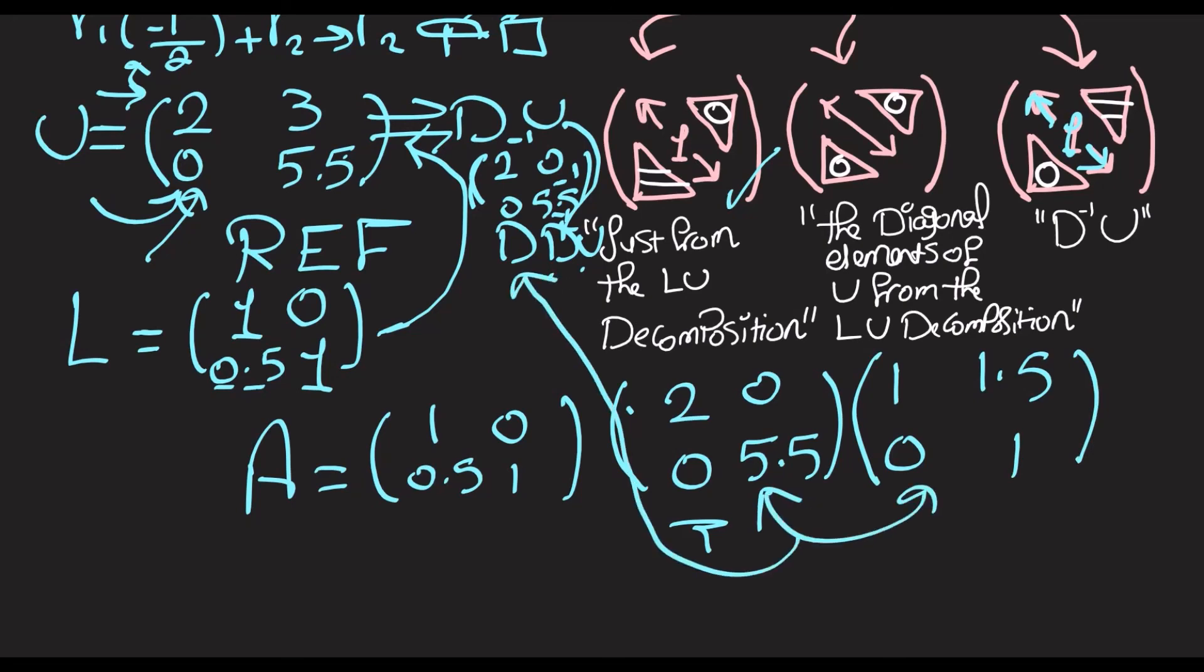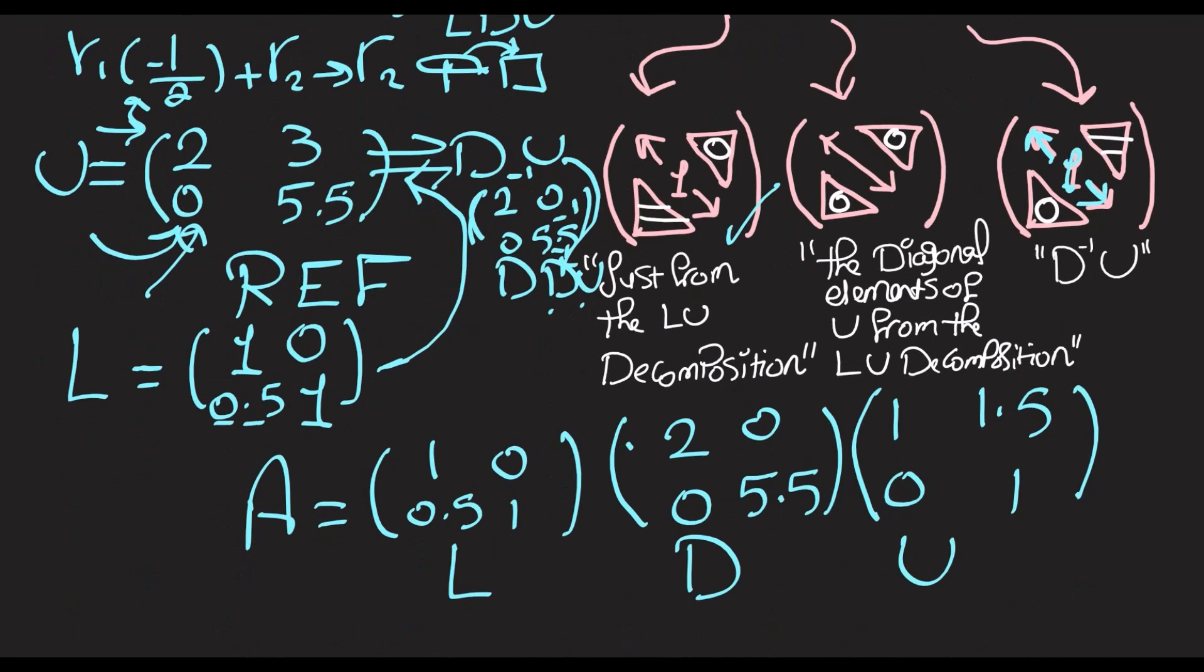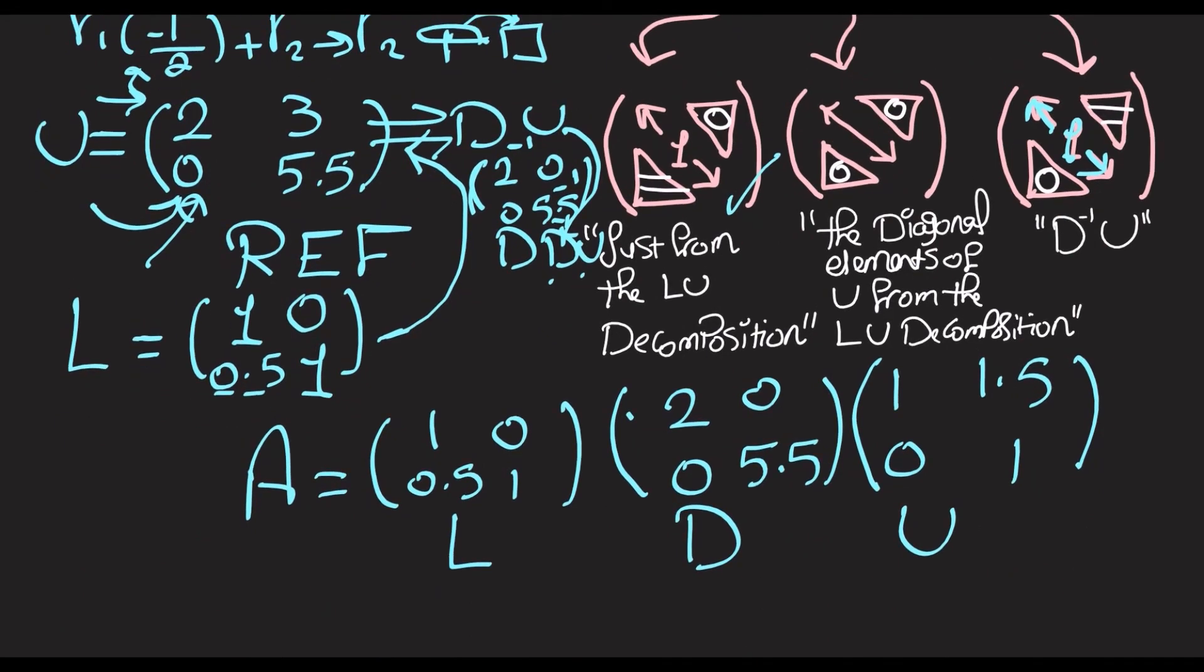And at this point if we multiply these two we get back the old U. So you can also notice that U is now unitary, and this is the LDU decomposition for our matrix. So that's it for this video. I hope you liked it, and thank you so much.